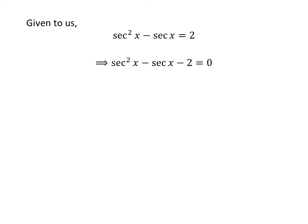Taking 2 from the right hand side to the left hand side of the above equation gives us: square of secant of x minus secant of x minus 2 is equal to 0.